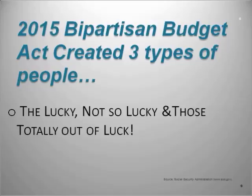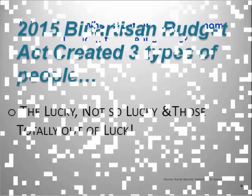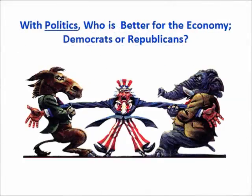In 2015, the Bipartisan Budget Act created three types of people: the lucky, the not-so-lucky, and those totally out of luck. The totally out-of-luck folks are the up-and-coming, younger boomers — those who were not yet 62. If you had just turned 62 or were under 62, you were basically the ones totally out of luck.